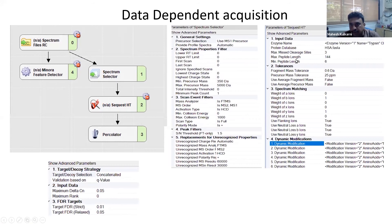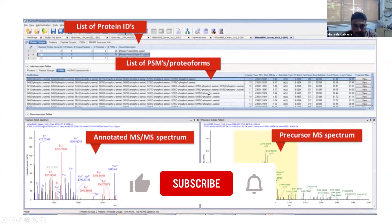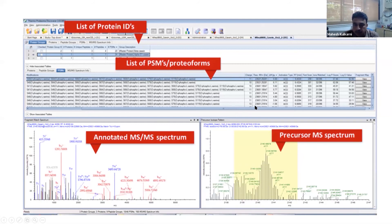After acquisition, you will need to do the database search. Using software like Proteome Discoverer, you will get a list of protein IDs as well as peptide spectral matches and peptide sequence details. You also get the MS/MS of each peptide. As I said, for two hours of LC-MS/MS acquisition, you can identify about three to five thousand proteins — in some cases even five thousand proteins.